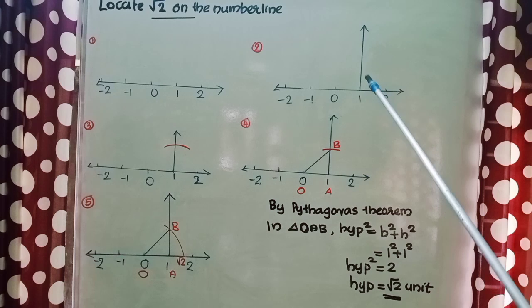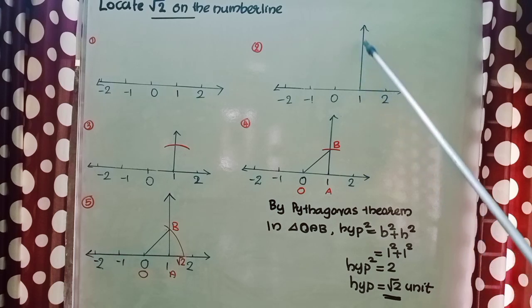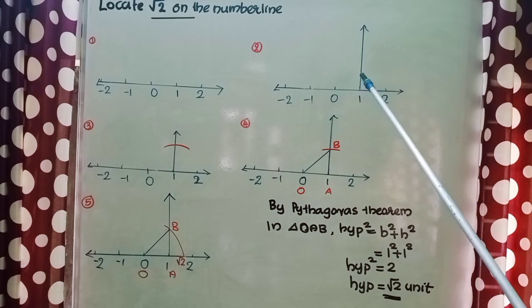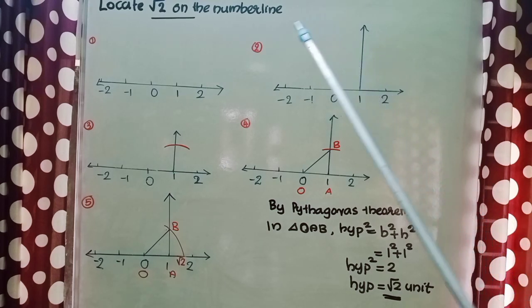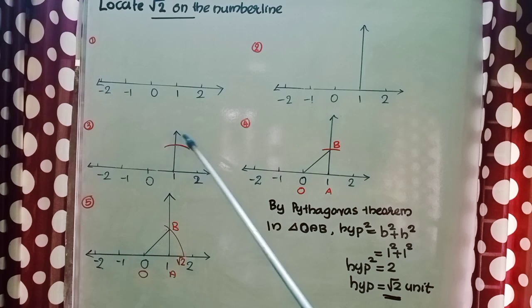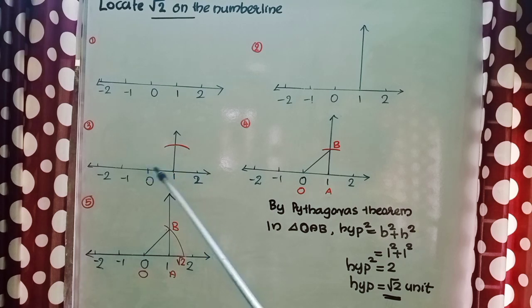After that, from the point 1, I have drawn the perpendicular line by using protractor. After that, on that perpendicular line, I have drawn an arc at a distance of 1 unit up. This 1 unit distance we can take by using a compass.